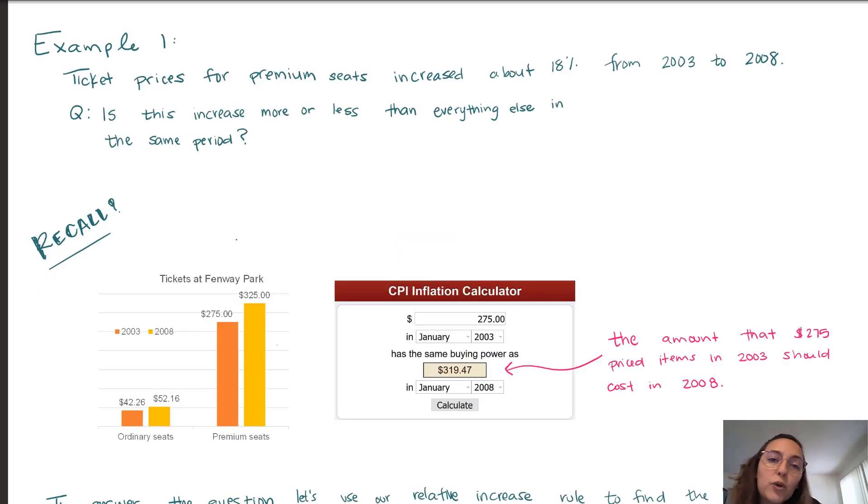To begin, we're going to explore the example that we covered in percentages. We had two types of tickets, one for ordinary seats and one for premium seats. In percentages, we discussed two important rules. One was the relative change formula, and one was the absolute change formula. Using the relative change formula, we determined that the premium seats increased about 18% from 2003 to 2008.